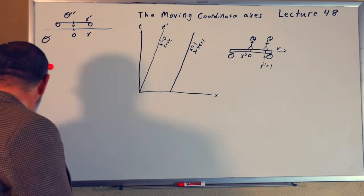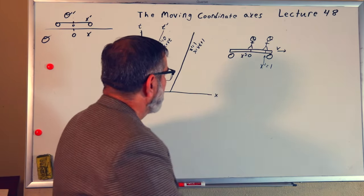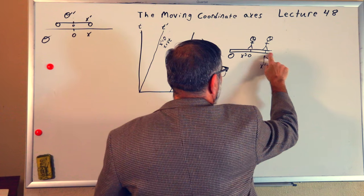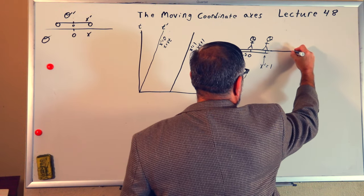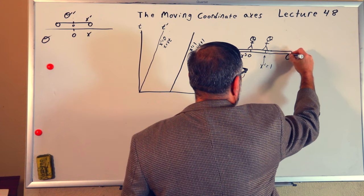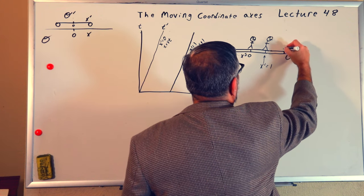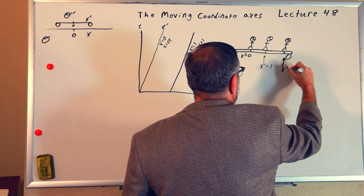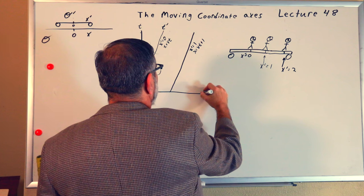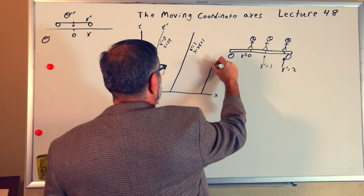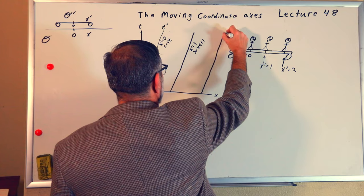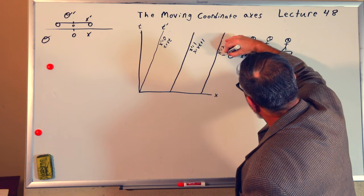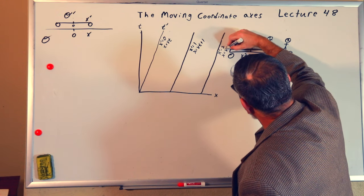I'm going to draw another observer on the train. This time he is located at x prime equals two. That line, which is also going to be parallel to the other lines, will be given by x prime equals two all along this line, or x equals vt plus two.